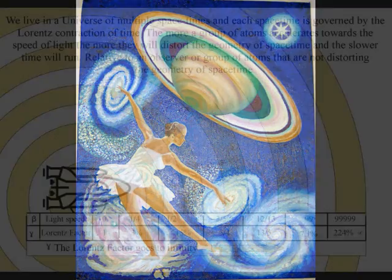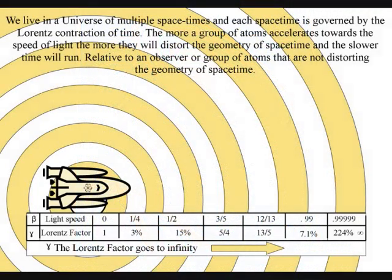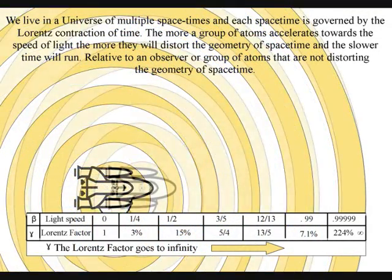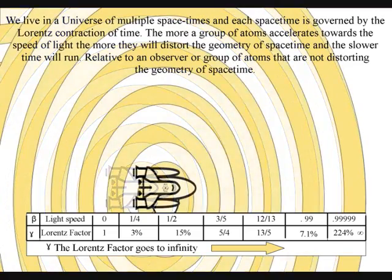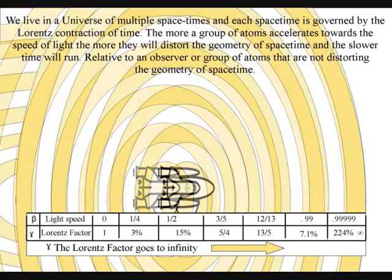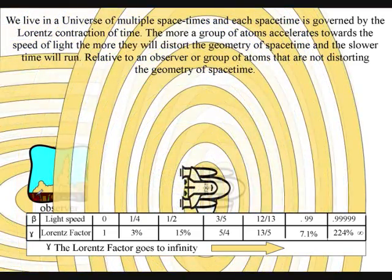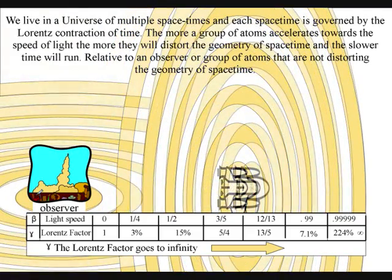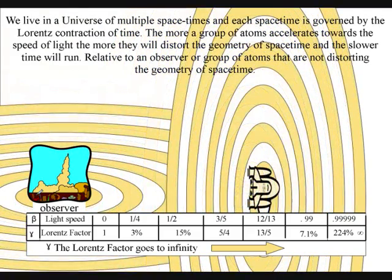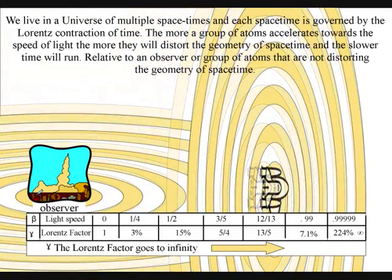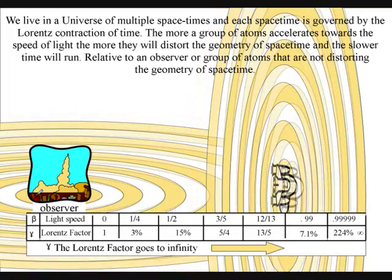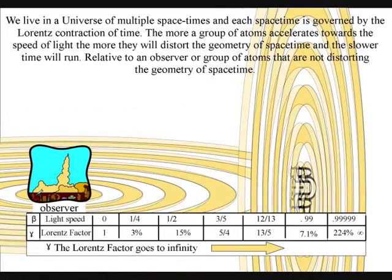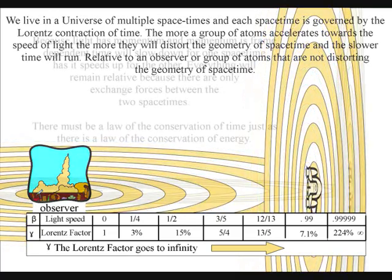The paradoxes of quantum mechanics can be explained without the need of parallel universes. In a new theory called quantum atom theory, the variable of time can explain these paradoxes. We know that time is a variable because we have time dilation when objects accelerate towards the speed of light, and we also have gravitational time dilation around objects of great mass.